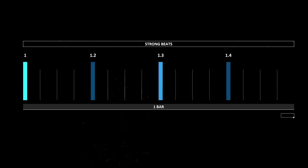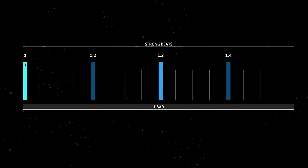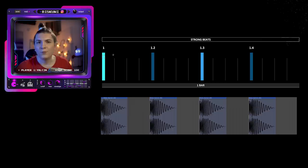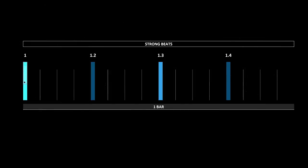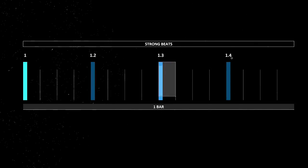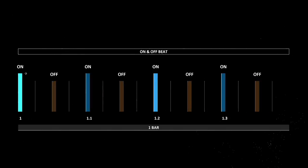Before we start creating the toms, we need to understand the simple theory behind the drum beats. The first concept is strong beats. In four-to-the-floor dance music, the strong beats are where the kicks fall — one, two, three, four. The strongest beat in a bar is the first one, then the third, and the second and fourth are relatively less strong. In the context of tom creation, we count all kick hits as strong beats.